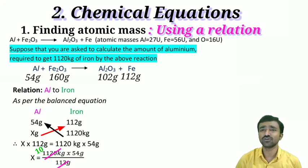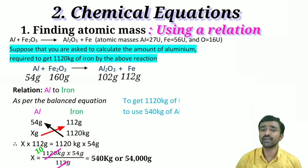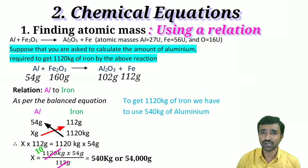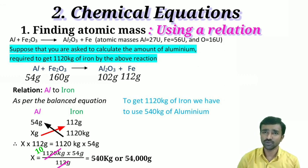So to get 1120 kg of iron, we need 540 kg of aluminum. Remember: if you have a balanced equation, you can simply use the ratio (number of times) to find the answer without full calculation — a very useful logic for objective questions and entrance exams. Thank you, we will meet with another problem in the next class.